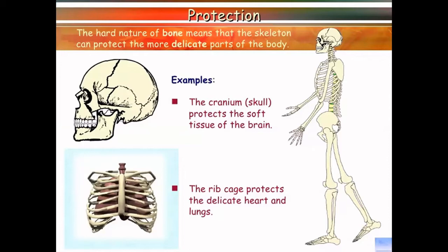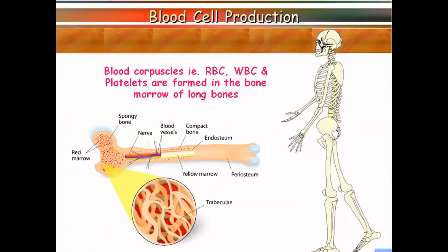The third function of our skeleton is blood cell production, which is also called hemopoiesis. Blood corpuscles — that is, RBCs, WBCs, and platelets — are formed in the bone. There is a special spongy tissue present inside the bone called bone marrow, where hemopoiesis actually takes place.